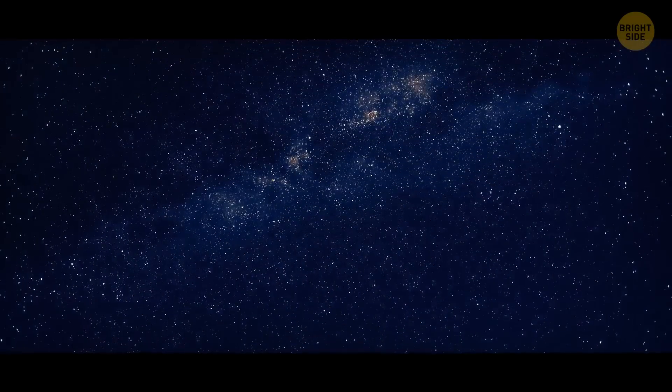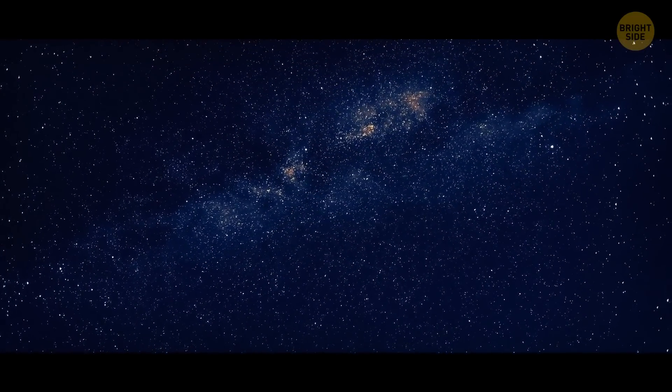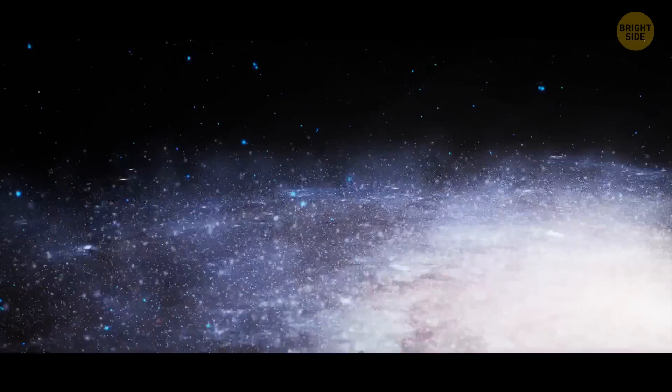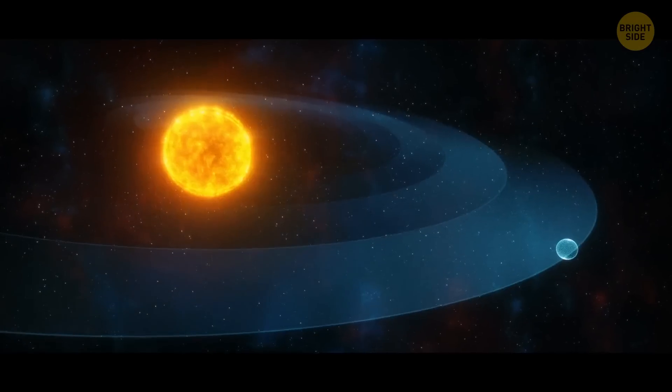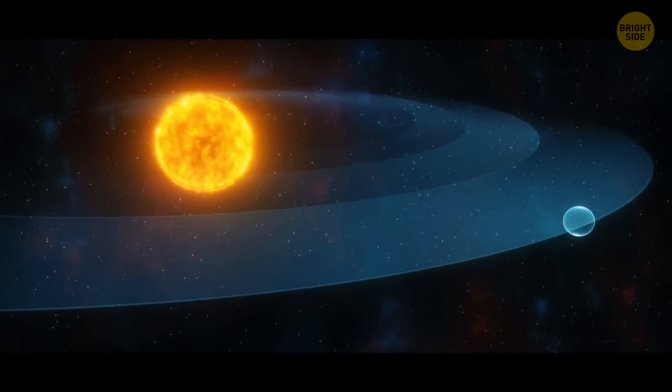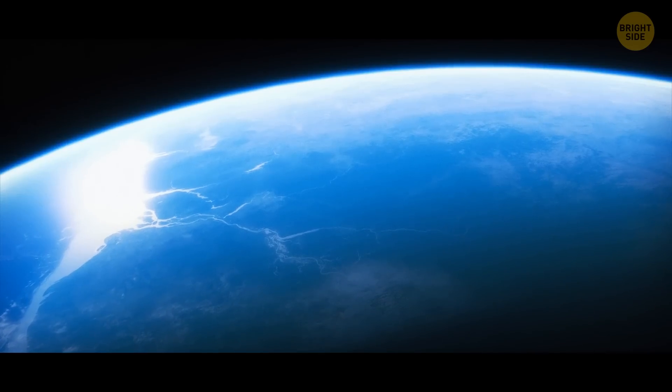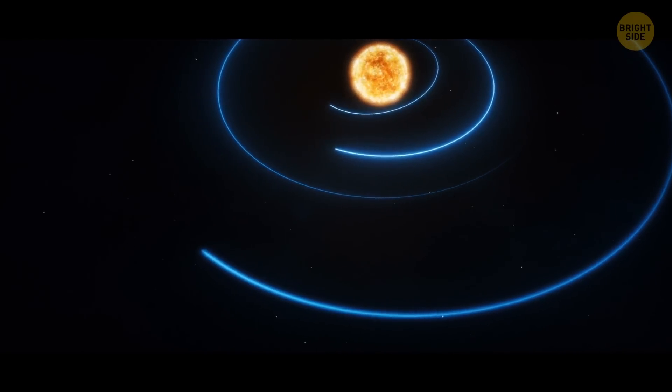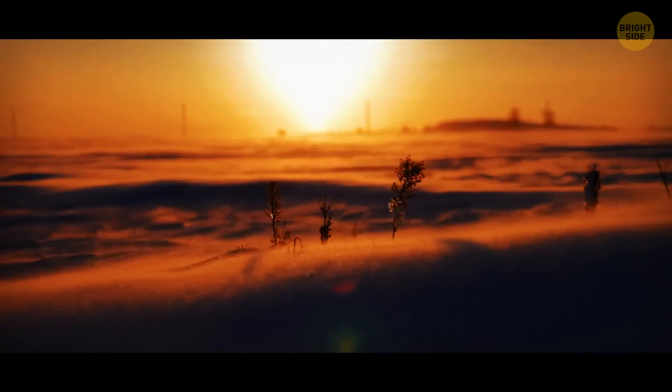But that's not all. Look at all this huge space Earth would have all to itself. It means our planet would have an opportunity to travel a bit. It could even choose to leave the Goldilocks zone. But then, would life on the planet still be the same? So let's say Earth started drifting away from the Sun. Then, it'd soon get too cold on the planet.